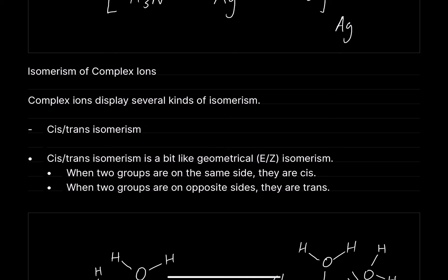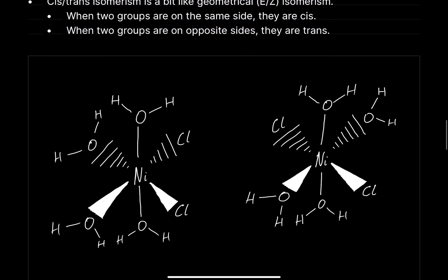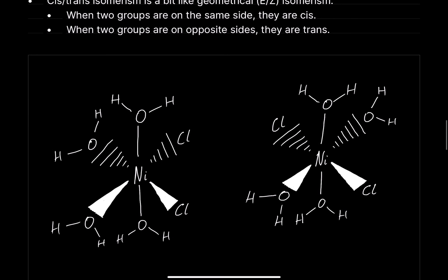Isomerism of complex ions — complex ions display several kinds of isomerism. Cis-trans isomerism is a bit like geometrical E/Z isomerism. When two groups are on the same side, they are cis; when two groups are on the opposite side, they are trans. A good example is the nickel complex Ni(H2O)4Cl2.